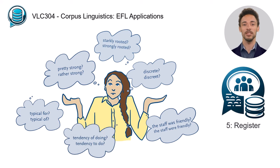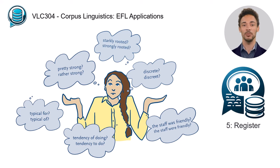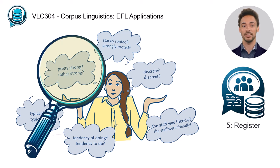Unit 5 will deal with a topic that especially students beginning to learn English might not even be aware of: finding the appropriate register. A student writing a term paper might wonder if it is okay to use pretty as an intensifier, as in pretty strong, or if they should use rather instead.